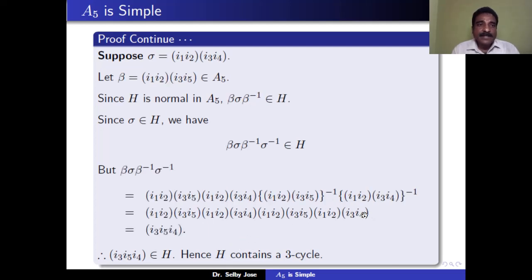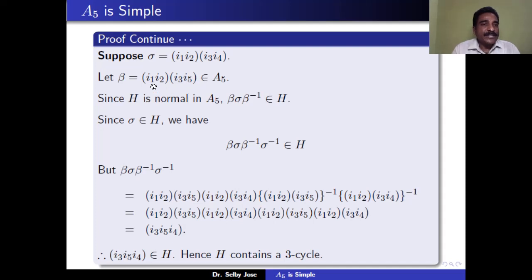Now suppose σ is a 2-2 cycle of the form (i1,i2)(i3,i4). Choose β = (i1,i2)(i3,i5), a product of two transpositions, which is an even permutation and thus belongs to A5. Since σ is in H and β is in A5 and H is normal in A5, β σ β⁻¹ is in H. Therefore β σ β⁻¹ · σ⁻¹ also belongs to H.